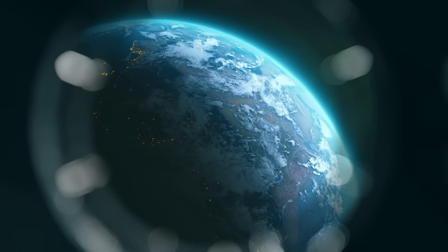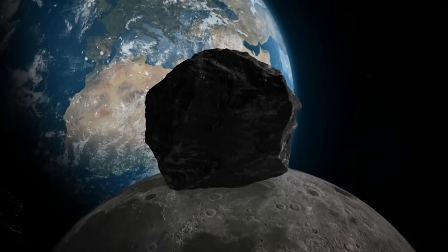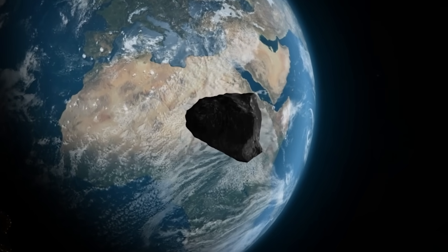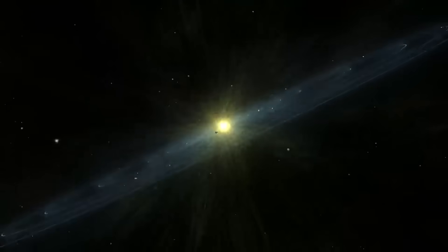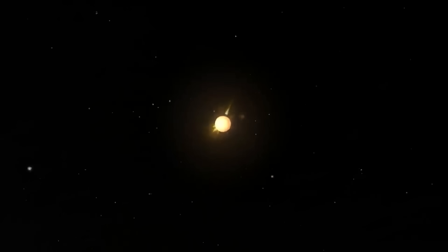A trajectory marker, precise to within kilometers, indicating where 3I Atlas would intersect with our planet's orbital plane in the year 2031. The object hadn't escaped the solar system. It had set a return point.